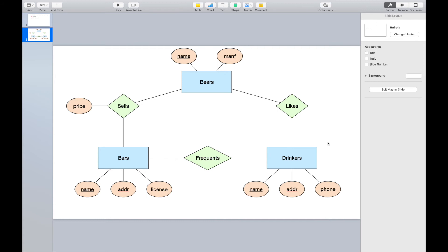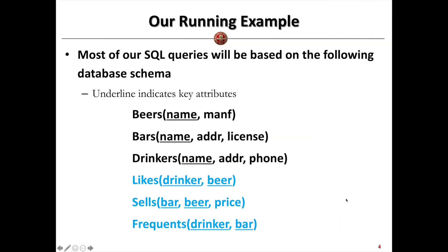Among them, they have some relations. Between beers and drinkers, we have 'likes', denoting a drinker likes a beer. Between bars and beers, we have 'sells', with one attribute price, denoting a bar sells a beer at some price. And between bars and drinkers, we have 'frequents', denoting a drinker goes to a bar very often.